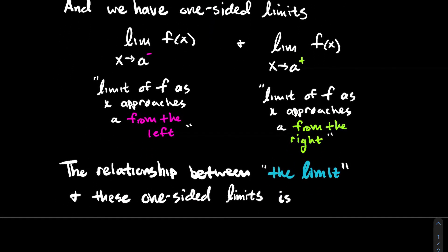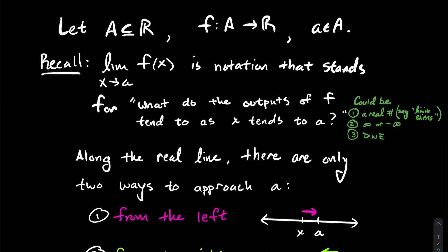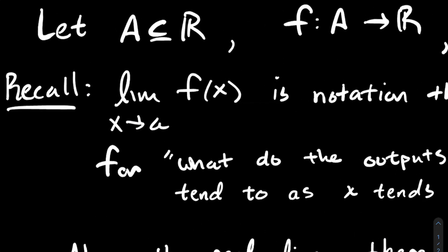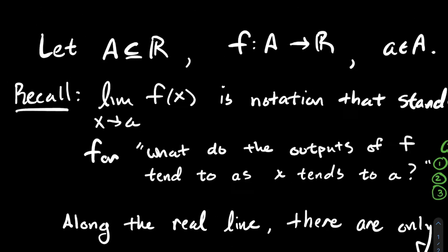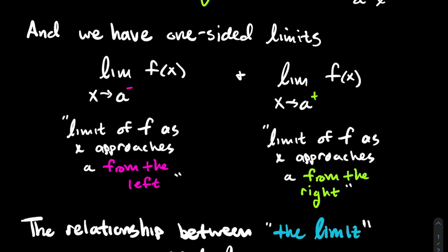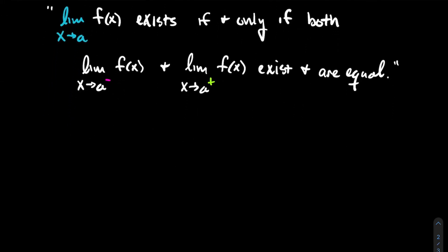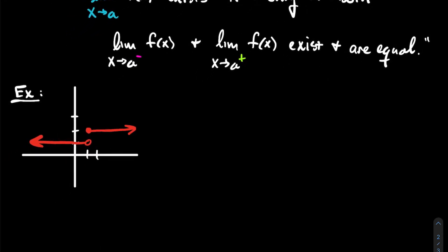In calculus one we said there's a relationship between the limit — where I don't have some plus or minus up in the exponent on a — and these two one-sided limits. The relationship is: the limit as x approaches a of f of x exists if and only if both the one-sided limits exist and those one-sided limits have to match — they have to give you the same real number. So that's a characterization of what it means for a limit to exist.